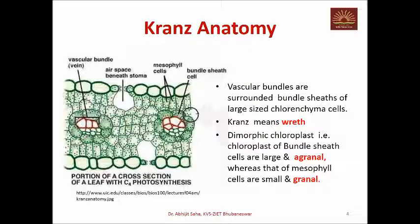Now let me tell you some important characteristics of plants where the C4 cycle is operative. First of all, these plants grow in tropical and subtropical areas where the temperature is quite high and salinity is also common. Apart from this, the most important anatomical feature is Kranz anatomy.